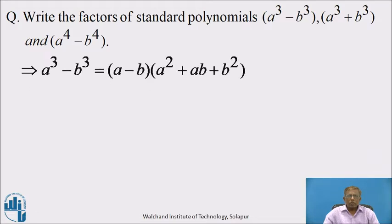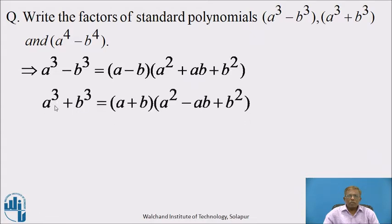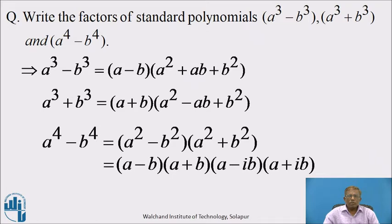Let us see the solution. The factors of a³ − b³ are (a − b)(a² + ab + b²). The factors of a³ + b³ are (a + b)(a² − ab + b²). The factors of a⁴ − b⁴ are initially (a² − b²)(a² + b²), and then the factors of a² − b² are (a − b)(a + b). Similarly, the factors of a² + b² are (a − ib)(a + ib). So these are the three standard polynomials with their factors, which we learned in lower classes.